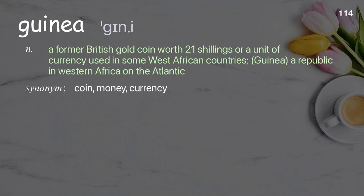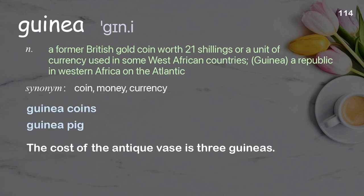Guinea: A former British gold coin worth 21 shillings, or a unit of currency used in some West African countries; also a republic in Western Africa on the Atlantic. The cost of the antique vase is three guineas.